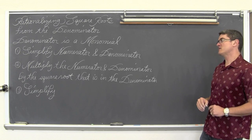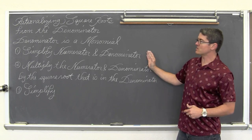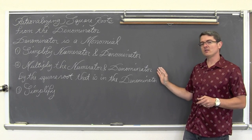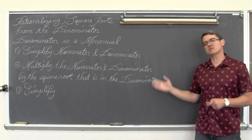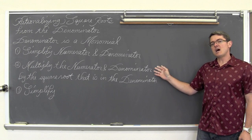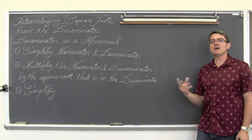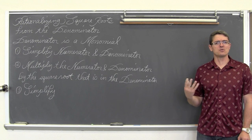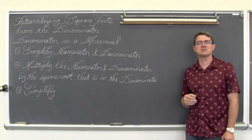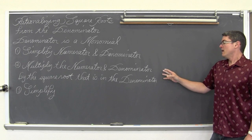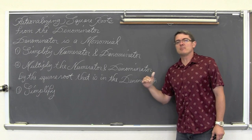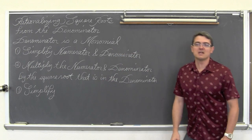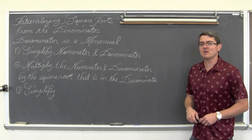For this video, when the denominators are just monomials, we are going to simplify the numerator and denominator as much as possible. We are then going to look at the denominator and if there are any square roots left, we are going to multiply the top and bottom of the fraction by that square root. We are just doing square roots — not third roots, fourth roots, or fifth roots. Once we multiply top and bottom by that square root, we are going to re-simplify and we will be done. Let's see what those three examples look like.